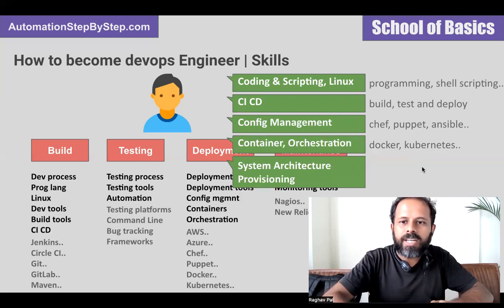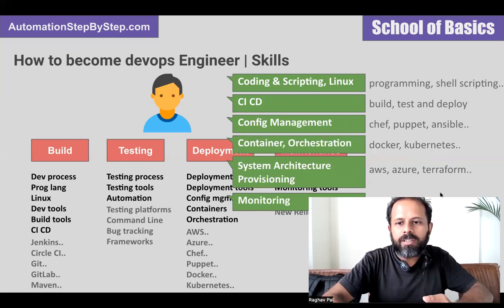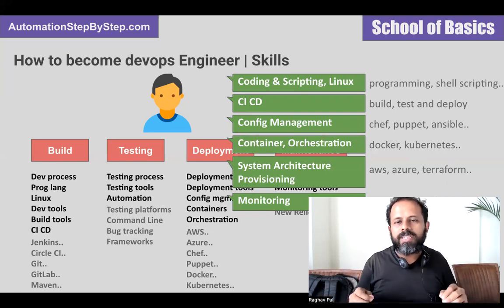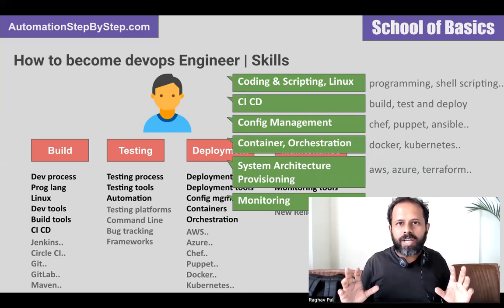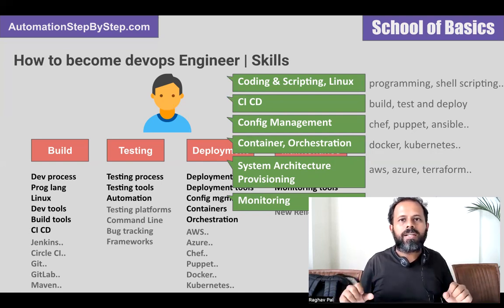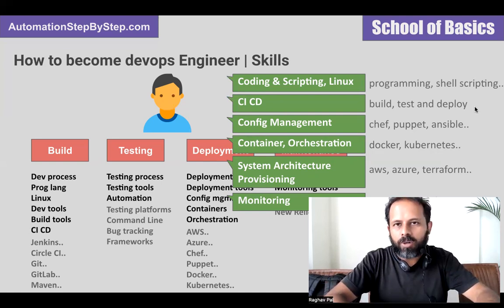For containers, learn Docker; for orchestration, learn Kubernetes. For system architecture and provisioning, you can learn AWS, Azure, or Terraform. For monitoring, you can learn Nagios, New Relic, or any monitoring tools. As mentioned, the tools and processes may differ by organization. But if you are trying to develop yourself as a general DevOps person who can join any DevOps team, you can learn one tool from each of these phases and then learn more as per the project requirements.